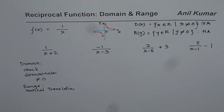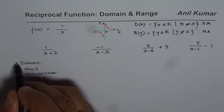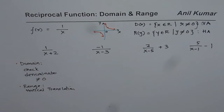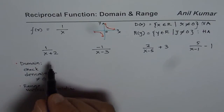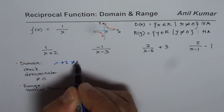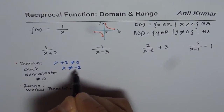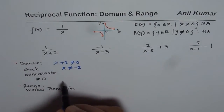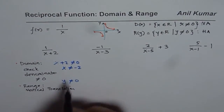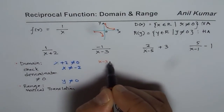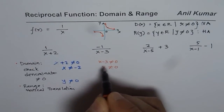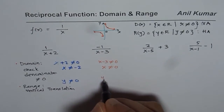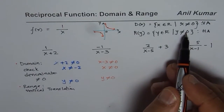Now you can pause the video, apply these strategies — first for the domain and then for the range — and find the domain and range for these functions. For the first one, x plus 2 should not equal 0, so x is not equal to minus 2. Since there is no vertical translation, y is not equal to 0. For the next function, x minus 3 not equal to 0 means x is not equal to 3. Since we are not shifting up or down, y is not equal to 0.